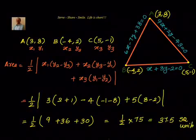The unit is square units — or square centimetres if dimensions are in centimetres. That is how we can find out the area of a triangle given the equations of its sides. The process involves two steps.